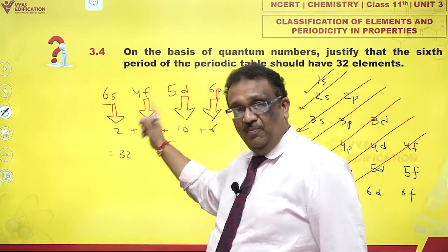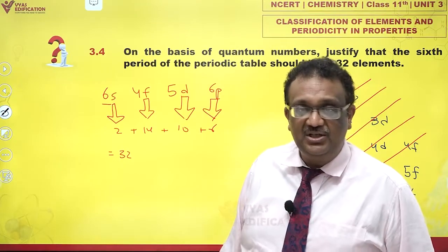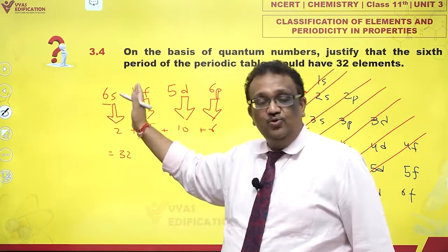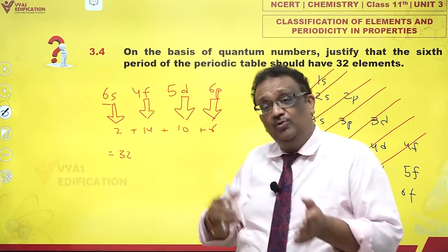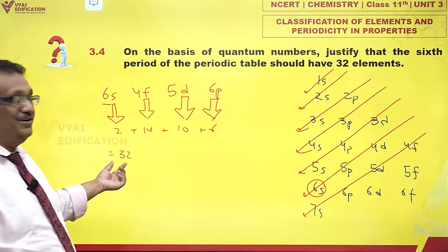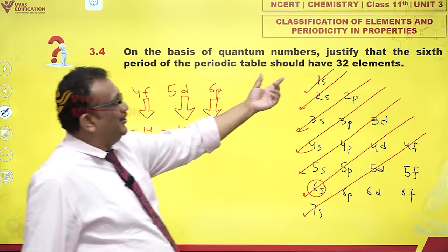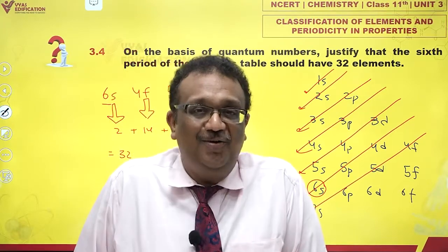Every time, you know, the increments being in units of 1, 1 each. Like, if I have 1 electron, then 2 electrons, 3 electrons, etc., that means within the nucleus, 1 proton, 2 protons, 3 protons, etc. That way, I could have 32 different choices. That means 32 elements can be present in the 6th period of the periodic table.